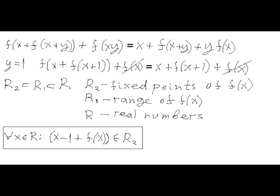Now, let's see what happens if we plug in number 1 for y. It will have f of x in each side of this equation that cancel each other. And the result of that is that x plus f of x plus 1 for any real x is a so-called fixed point for function f. Let's denote the set of all fixed points of function f by R2.